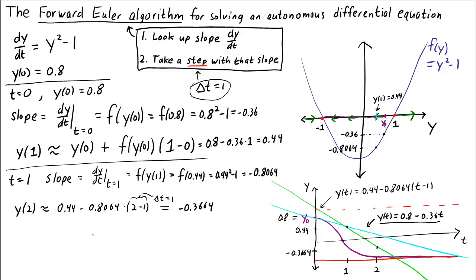Here we've illustrated how to use forward Euler to go from time t equals 0 to the next time step, t equals 1, then to go from t equals 1 to t equals 2. In general, to go from time t to time step t plus Δt.